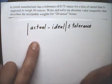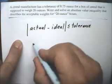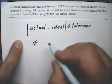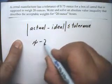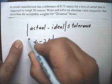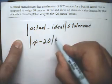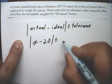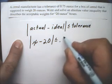So the actual, like I said, is X minus the Ideal, minus 20, and the Absolute Value of that has to be less than or equal to the .75.